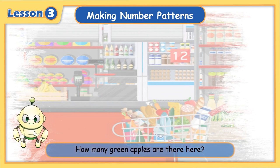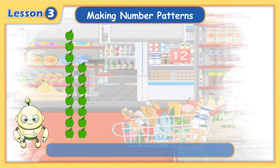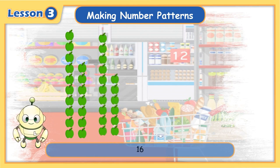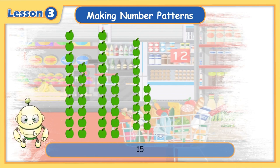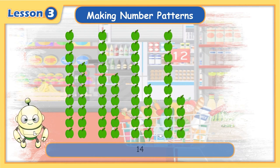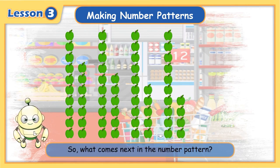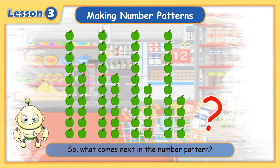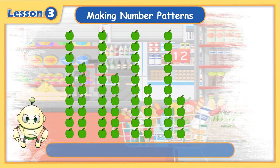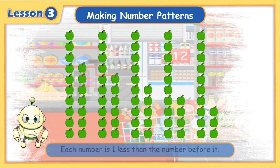17, 16, 15, 14. So what comes next in the number pattern? 13! Each number is one less than the number before it.